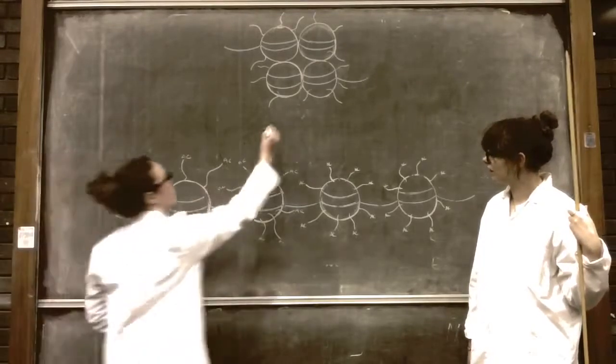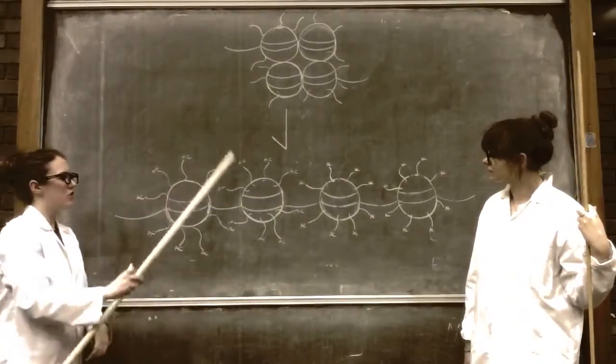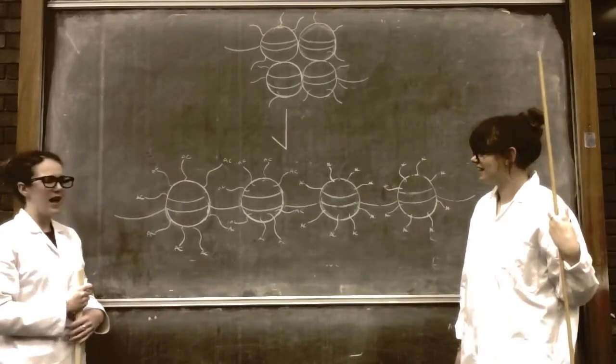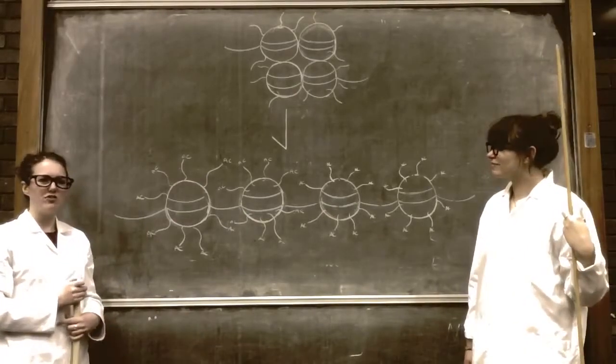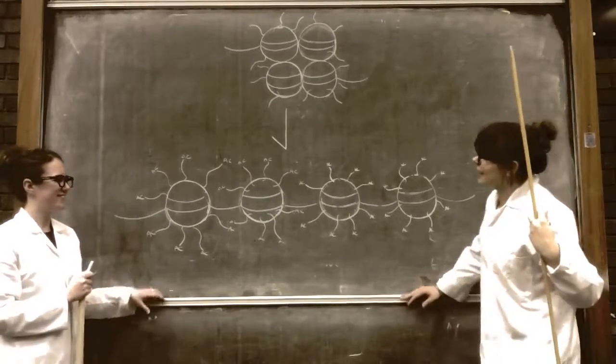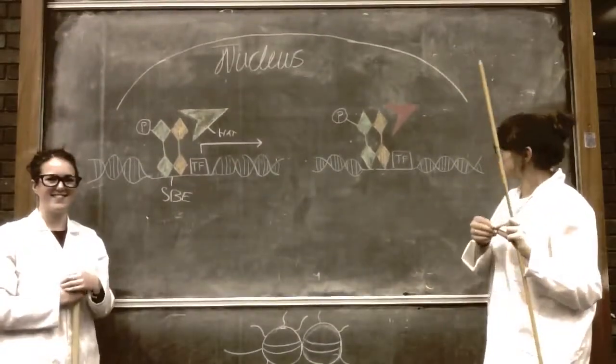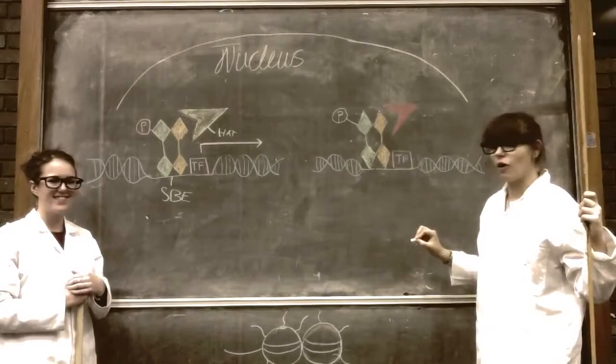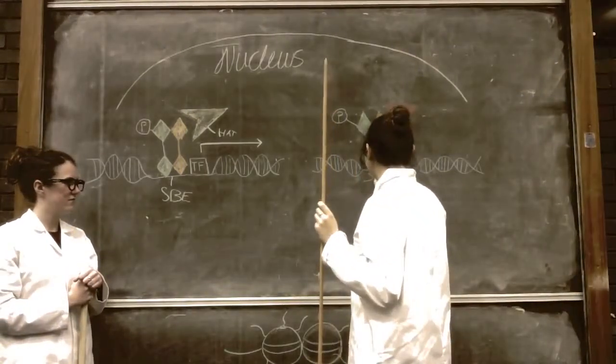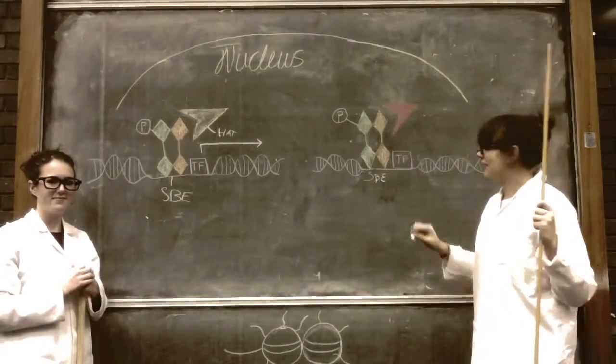So it goes from a compact structure to a loose and free structure. But Julia, regulating genes is not about just turning them on—how would you turn them off? Well, once again the phosphorylated SMAD complex binds to your SMAD binding element, SBE.